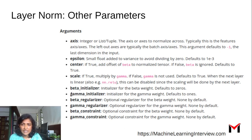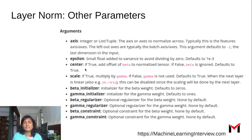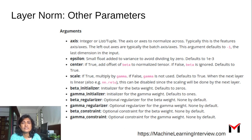The beta and gamma can be initialized here, and so can the epsilon. Epsilon is used in the normalization process, which involves subtracting the mean and dividing by the square root of sigma squared. A small constant epsilon is typically added as a smoothing factor, and you can control this epsilon as well.